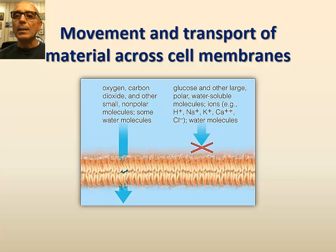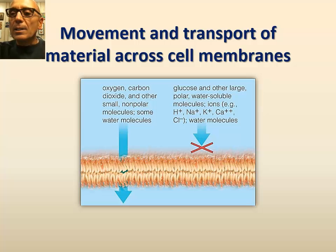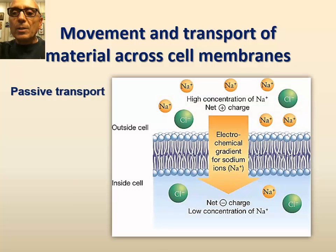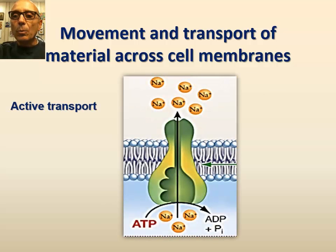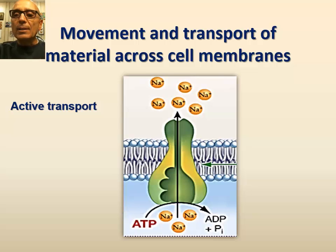No matter what the permeability is, substances move across a membrane in two ways. The first one is through passive processes, meaning that the cell does not require energy expenditure in order for substances to move across cell membranes. In passive transport, substances move along their electrochemical gradients, meaning from an area of high concentration to an area of low concentration, and ions are attracted to oppositely charged particles. The second way is through active transport processes, meaning that energy in the form of ATP is needed to move substances across membranes against their electrochemical gradient.